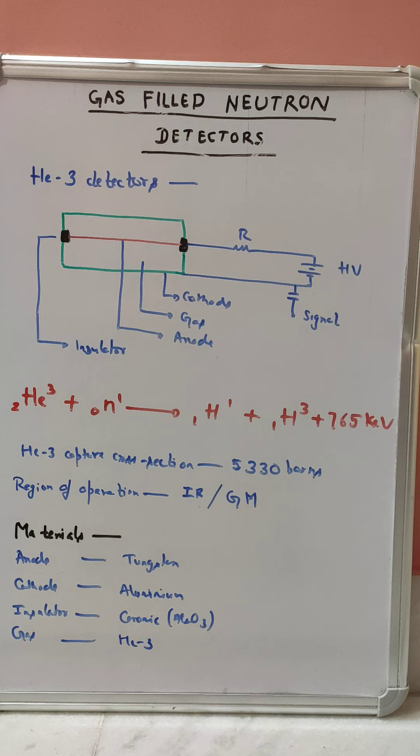Then we will see the materials. Anode is made up of tungsten as we need a thin wire that should be strong enough. Cathode we are using aluminum. Insulator we are using ceramic as we want very less current to flow between anode to cathode. The leak has to be less, so high insulation and resistance material, hence we are selecting Al2O3. Gas we are using helium-3.